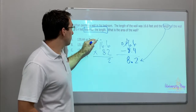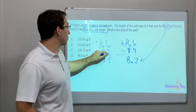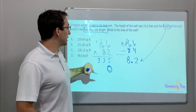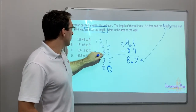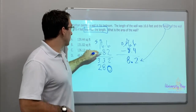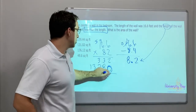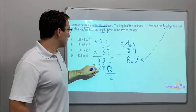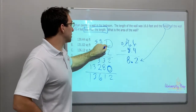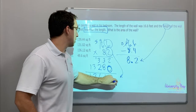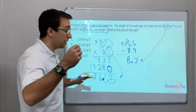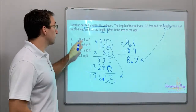Now 16.6 times 8.2: six times two is twelve, carry one; six times two is twelve plus one is thirteen; two times one is two plus one is three. Add a zero for the tens place: 48, 48 plus four is 52; eight times one is eight plus five is thirteen. Two plus zero is two, three plus eight is eleven, three plus two is five plus one is six, three, one.